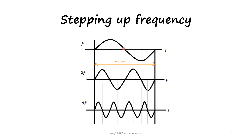Using a cycloconverter, if the input has a frequency F, we can get any output frequency such as 2F, 4F, or any value based on the operation of the switches.